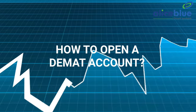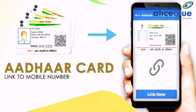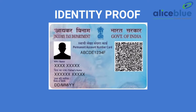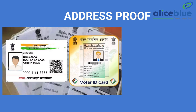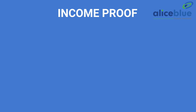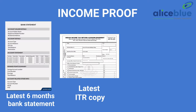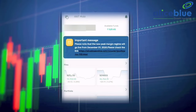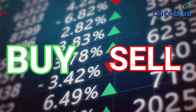How do you open a DMAT account? If your mobile number is linked with your Aadhaar card, you can open a trading and DMAT account online. You will require certain documents: for identity proof, a PAN card is mandatory; for address proof, an Aadhaar card, voter ID, or passport; and for income proof, the latest 6 months of bank statements, a latest ITR copy, and a 3-month salary slip. Once you open your account, you will be provided with a trading platform to buy and sell shares.